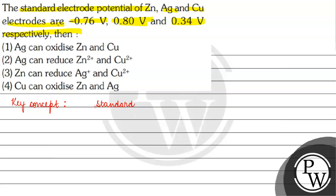Standard reduction potential — the greater the reduction potential of a species, the greater its tendency to get reduced. The more the value of reduction potential, the more will be the capability of the species to get reduced. If a species gets reduced itself, it acts as an oxidizing agent. What does an oxidizing agent do? An oxidizing agent oxidizes other species.